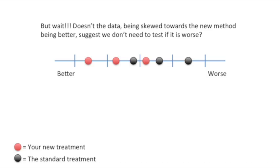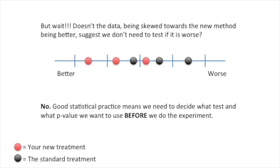But wait! Doesn't the data, being skewed towards the new method being better, suggest we don't need to test if it is worse? No. Good statistical practice means we need to decide what test and what p-value we want to use before we do the experiment.